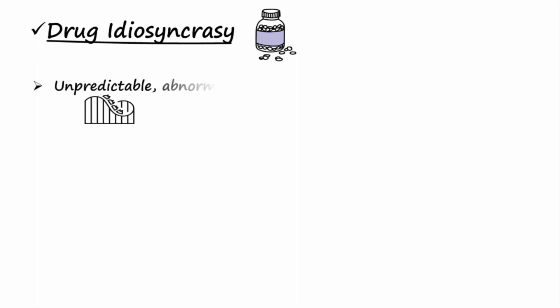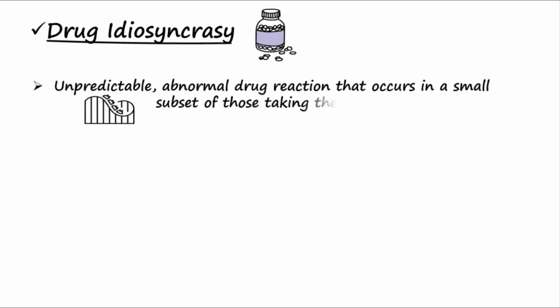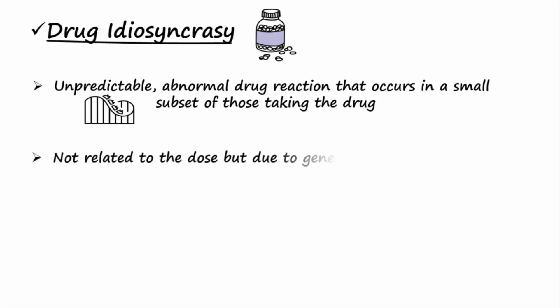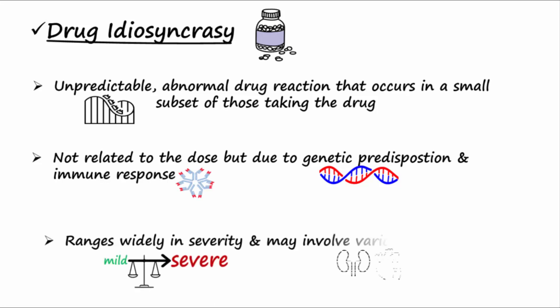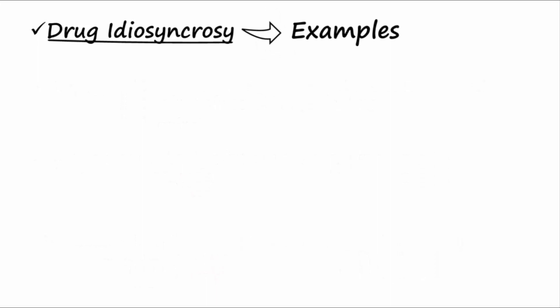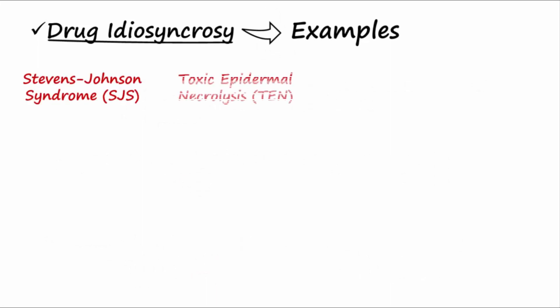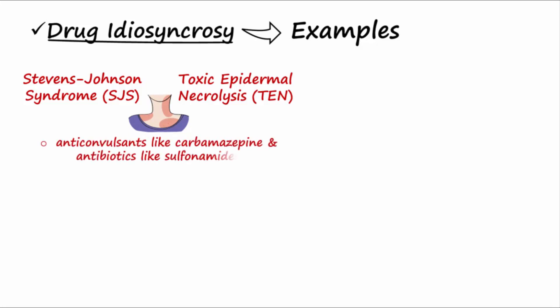Drug idiosyncrasy is an unpredictable abnormal drug reaction that occurs in a small subset of those taking the drug. This type of reaction is not related to the drug dose, but is due to genetic predisposition and immune response. Idiosyncratic responses range widely in severity and may involve various organs. Examples include Stevens-Johnson syndrome and toxic epidermal necrolysis, which are life-threatening skin conditions that may be caused by certain anticonvulsants like carbamazepine and antibiotics like sulfonamides.